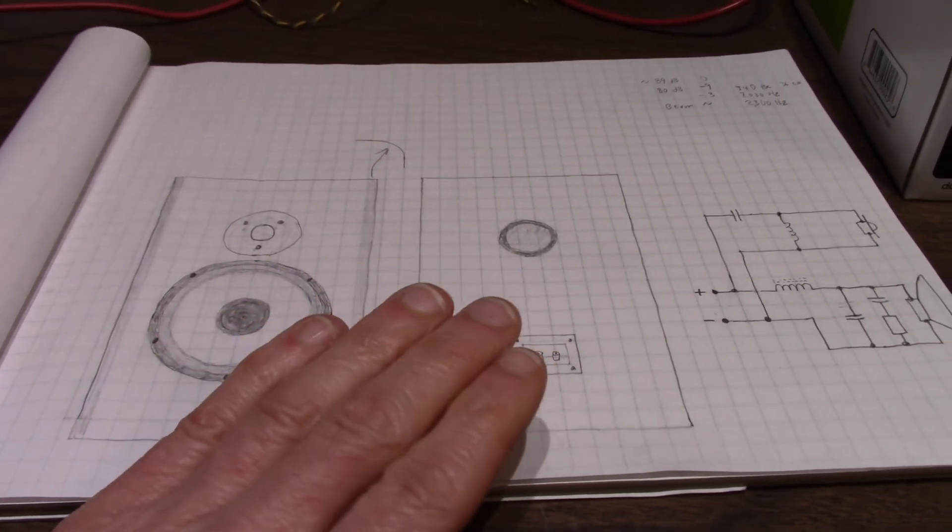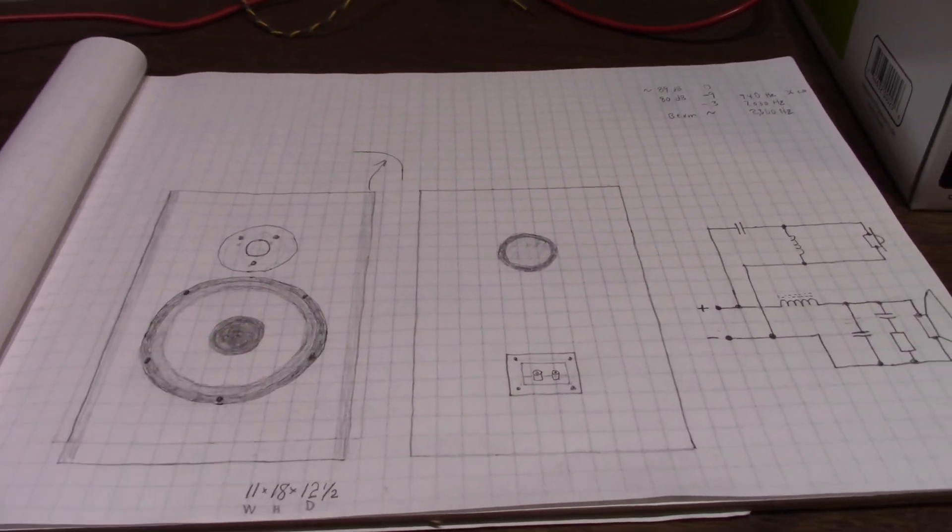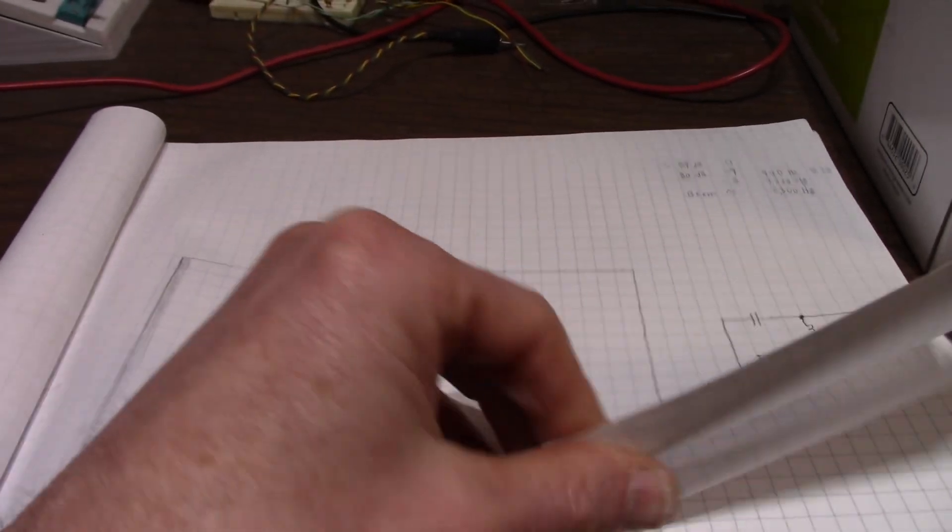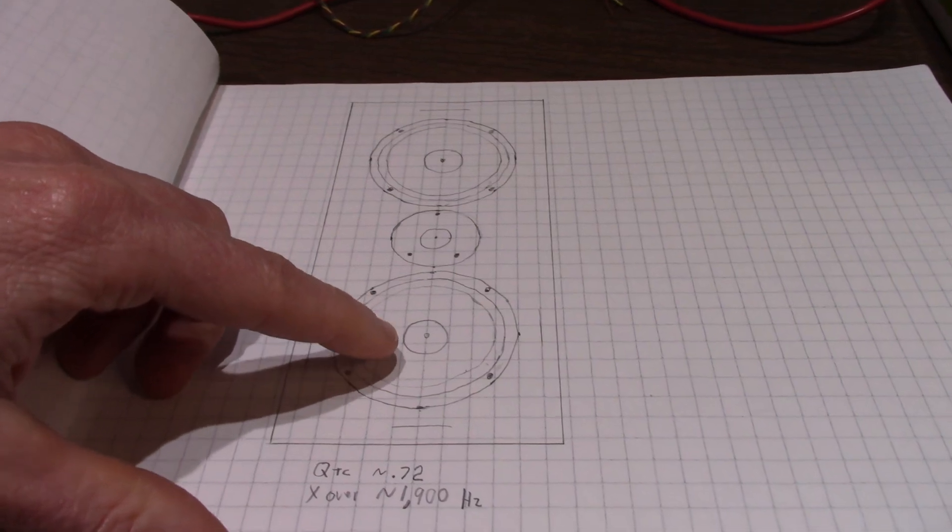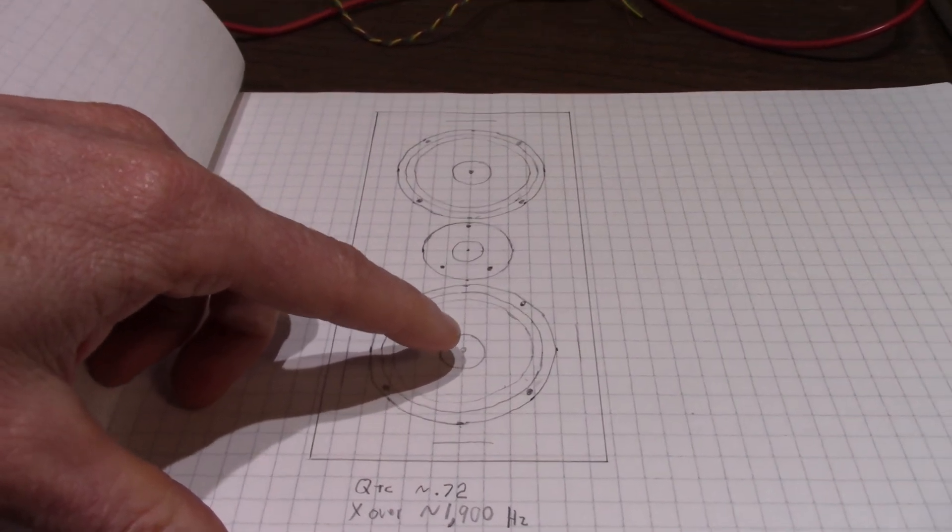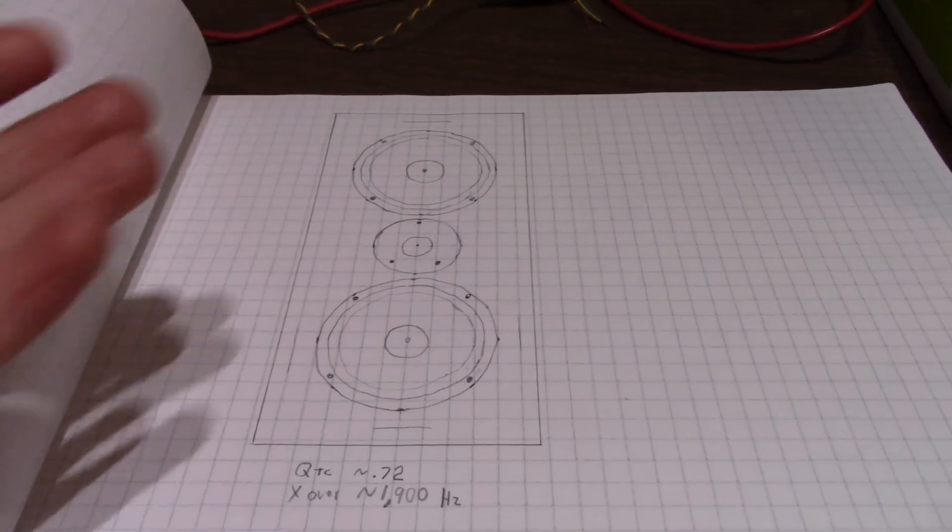So, I was thinking, well, if I go sealed, I'll lose some sensitivity. Maybe I should go with a 10-inch woofer. And I was thinking of maybe two woofers, two 8-inch woofers. A woofer-tweeter-woofer. Then I have to buy two more woofers then.